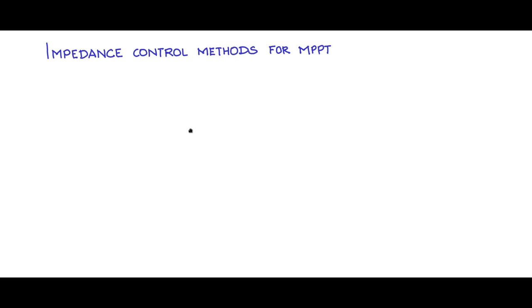Let us see how we can perform impedance control on converters interfaced to photovoltaic panels so that we can achieve maximum power point tracking.